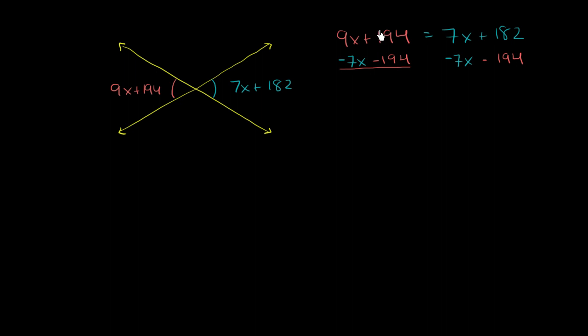And on the left, what we're left with is just 2x. And on the right, what we're left with, let's see, 182 minus 194. So if it was 194 minus 182, it would be positive 12. But now it's going to be negative 12. We're subtracting the larger from the smaller. So it's equal to negative 12.